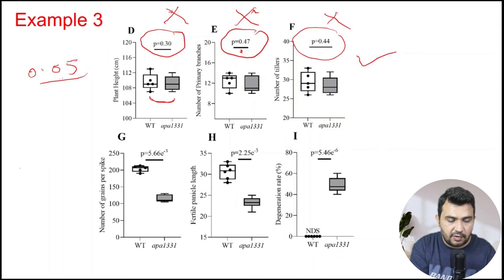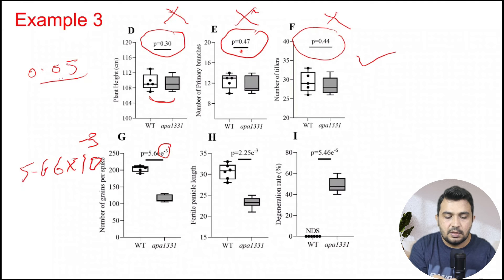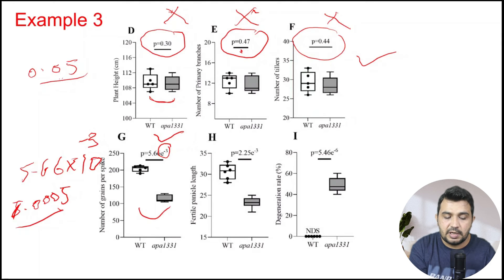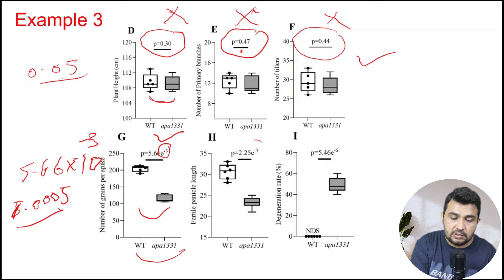However, for a value like 5.66 × 10⁻³, the minus 3 means it must have at least three zeros — so 0.00566 — which is less than 0.05. This means the data is significantly different; for example, the number of grains per spike in wild type and mutant type is significantly different.